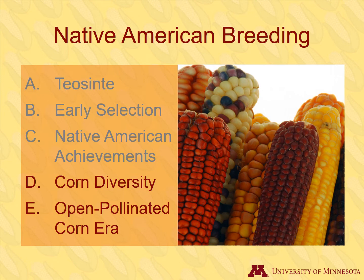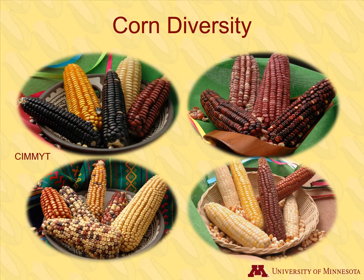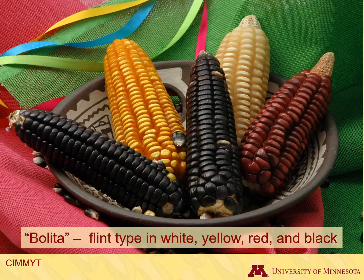We will now examine some of the diversity that early breeding accomplished. Some of the corn developed hundreds or maybe even thousands of years ago may still be present today in the form of landraces. Landrace corn is a variety specific to a certain region. Let's look at some of these landraces to get an idea of the diversity that Native Americans developed.